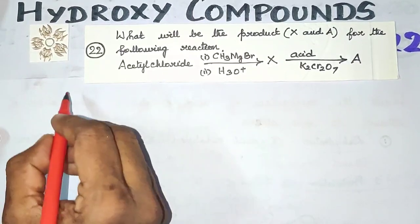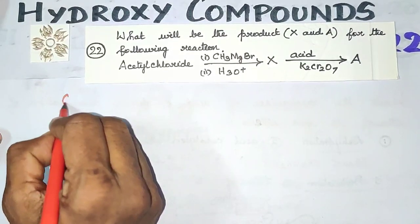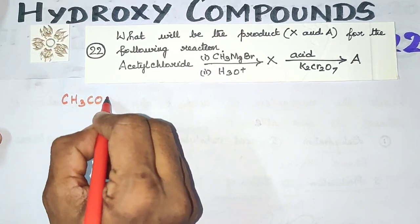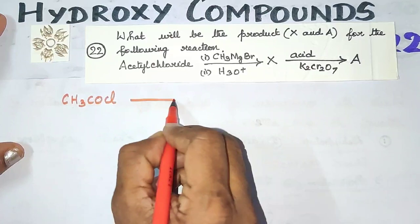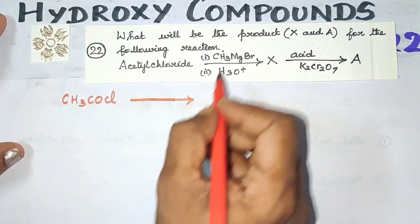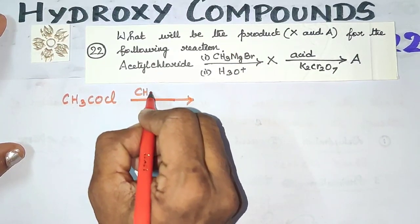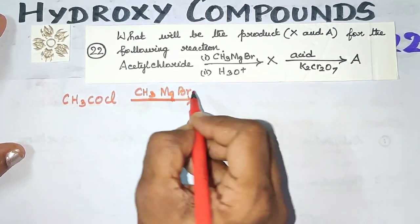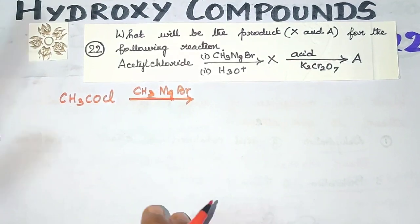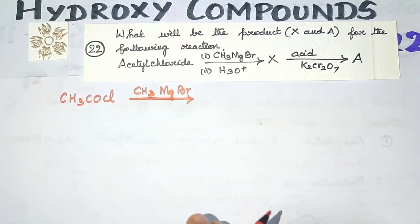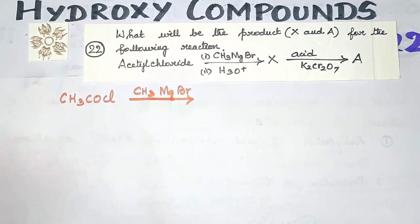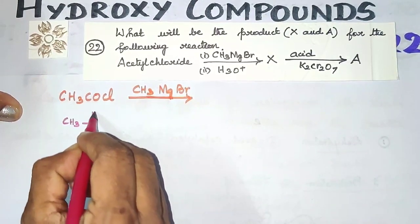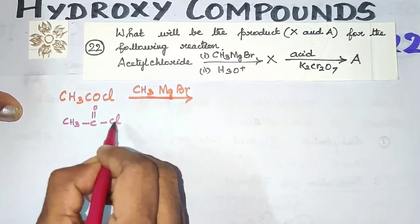So acetyl chloride — let's write the formula. Acetyl is the acetyl group, so acetyl chloride is CH₃–C(=O)–Cl. Now methyl magnesium bromide (CH₃MgBr) is the Grignard reagent we are treating it with. So we write CH₃–C(=O)–Cl reacting with CH₃MgBr.